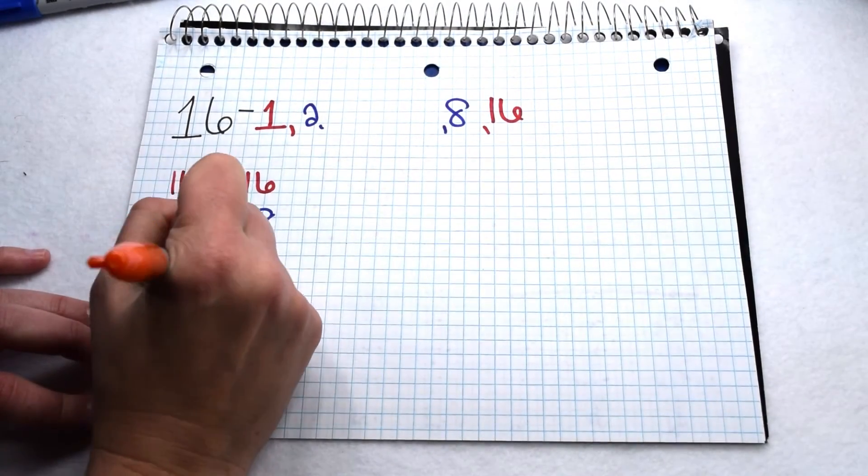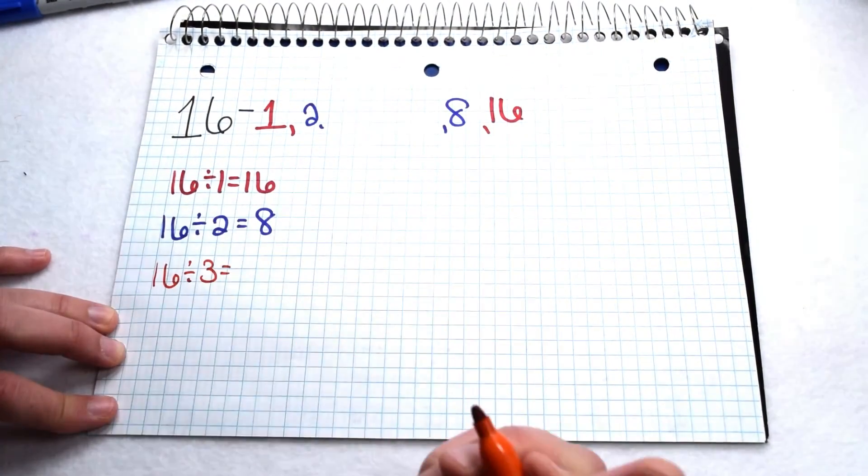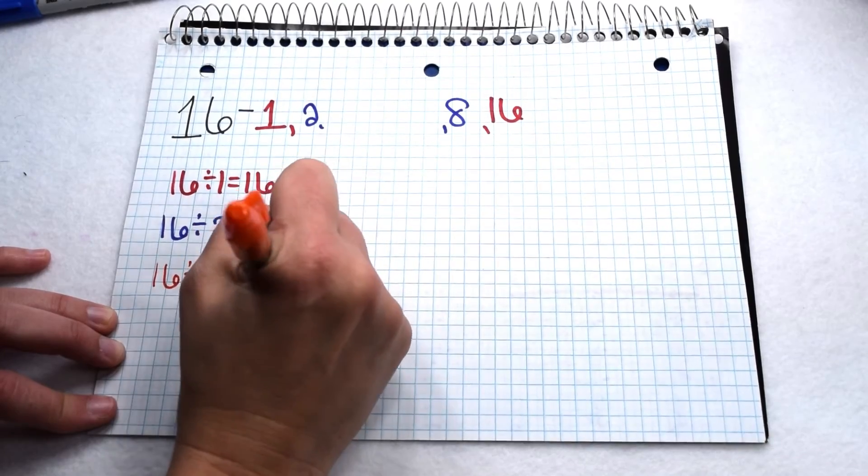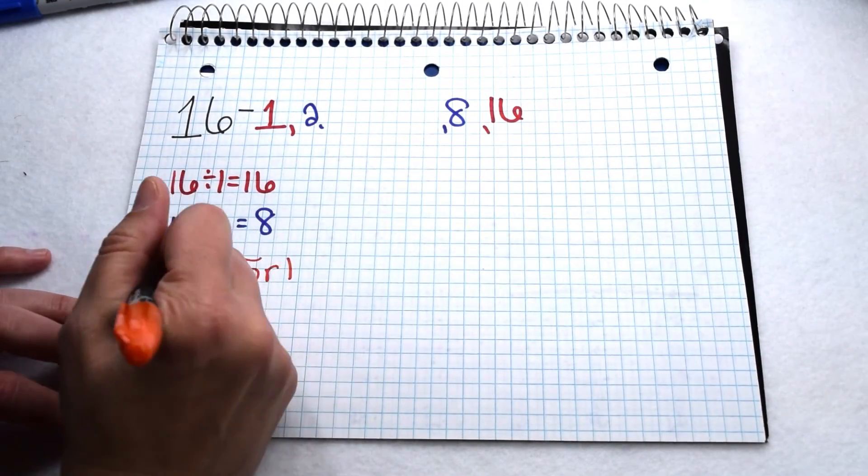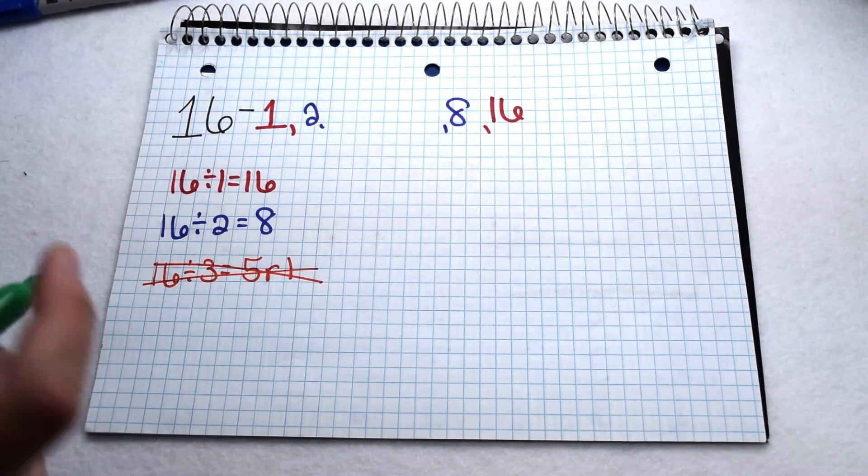If we check 3, 16 doesn't appear to be divisible by 3 but if we check 16 divided by 3 gives us 5 remainder 1. Since we have a remainder we know 3 isn't going to be a factor of 16 so it's not going to go on our list.